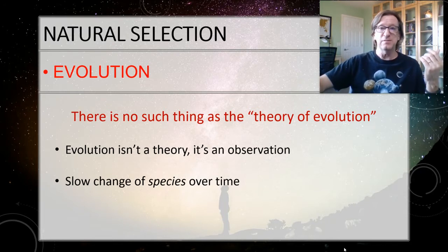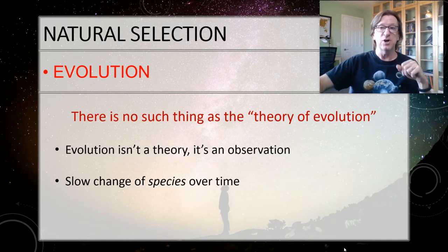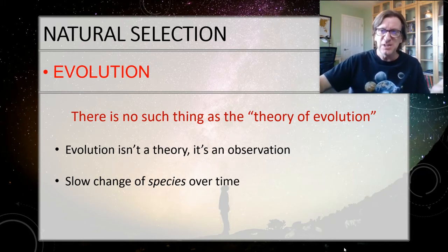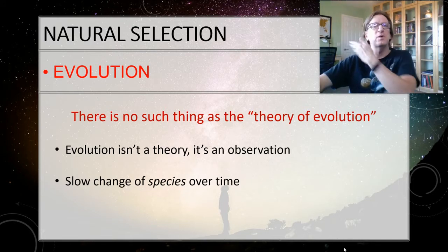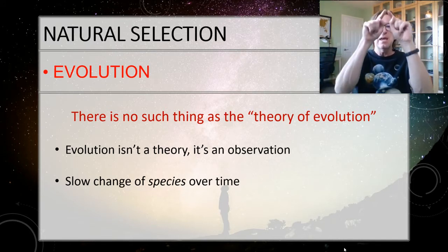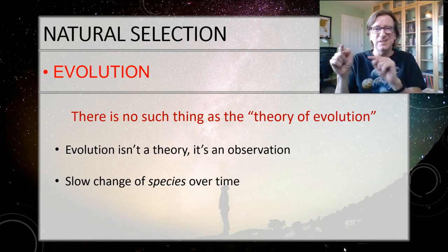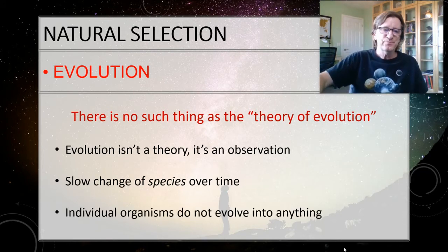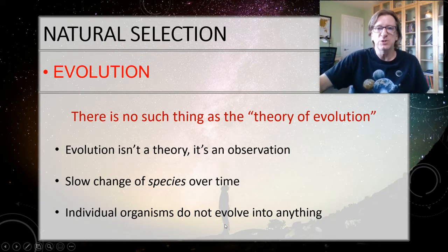Back at the Scopes trial, there was a debate about whether evolution could be taught in schools, and someone said, 'I've never seen a monkey turning into a man.' Well, no — you wouldn't. Because individual organisms don't evolve into other organisms. Humans and apes came from a common ancestor, but monkeys don't turn into humans and humans don't turn into monkeys. It just doesn't work that way. Individual organisms don't evolve into anything — you just are what you are.